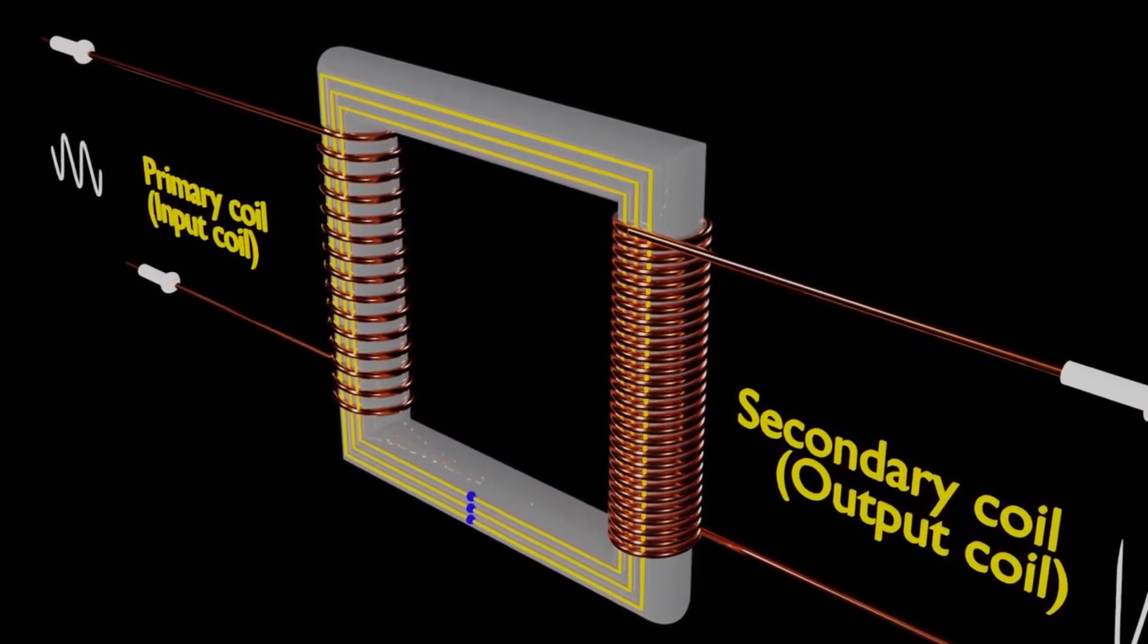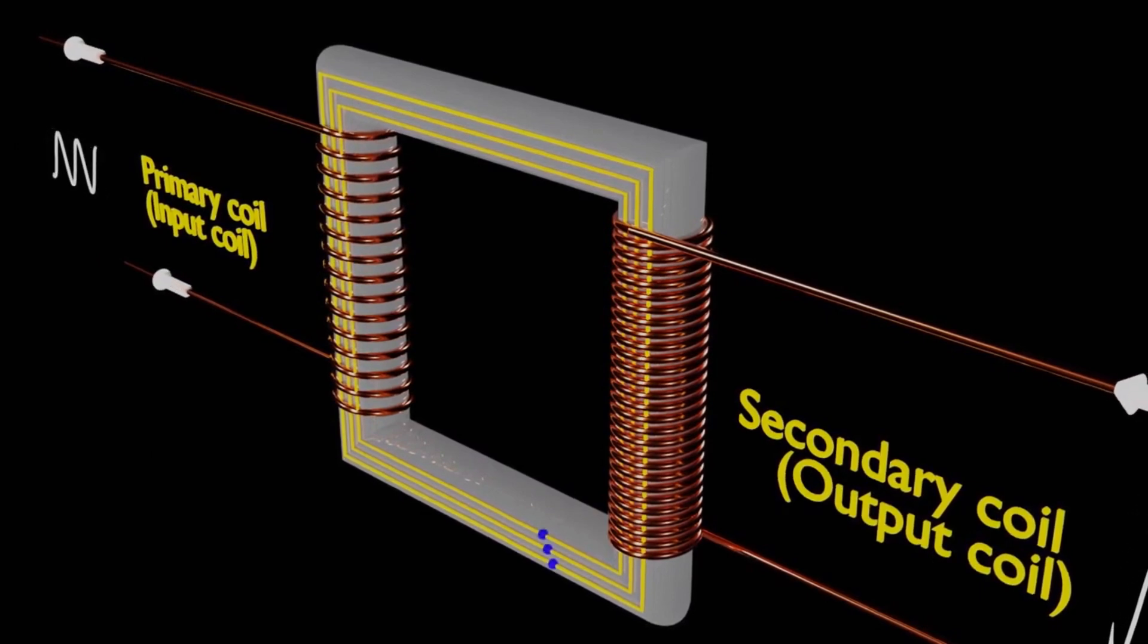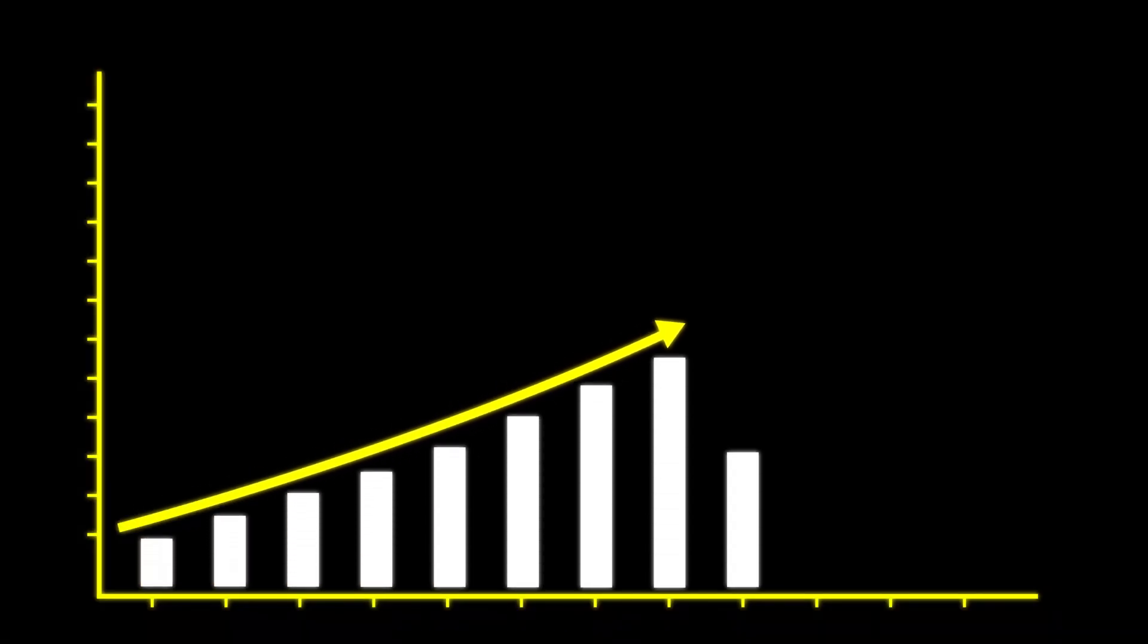So, lamination of the transformer core is a crucial design feature that improves efficiency by minimizing eddy current losses.